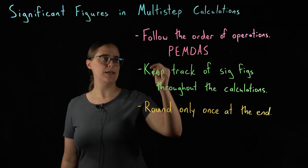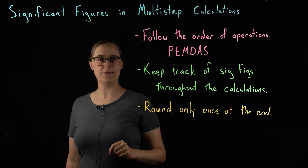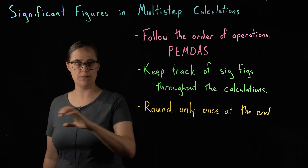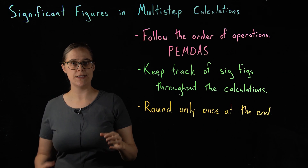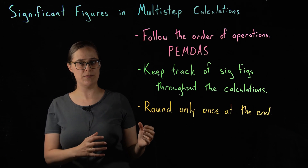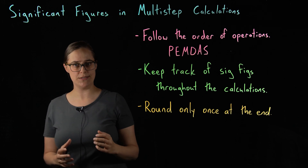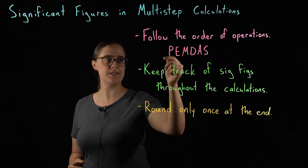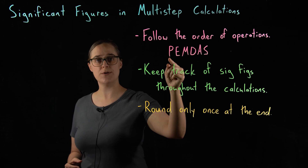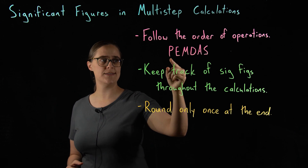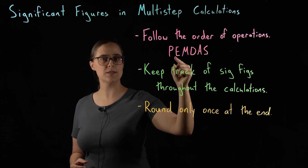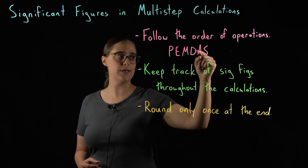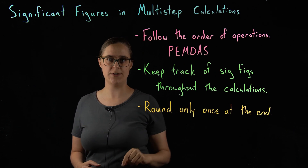Math is not like reading — you do not just solve the problem left to right. You pick out certain parts of the math problem to simplify first. In priority order: first you sort out your parentheses, then your exponents, then multiplication and division, and finally addition and subtraction.